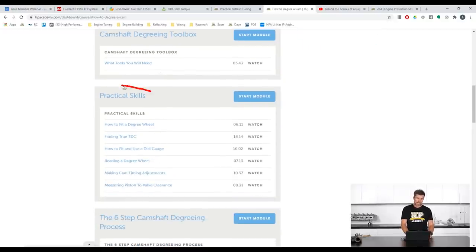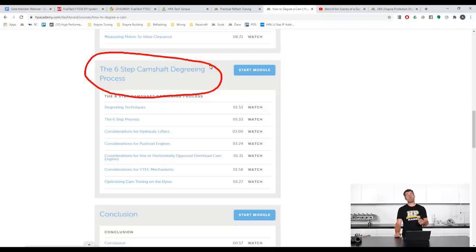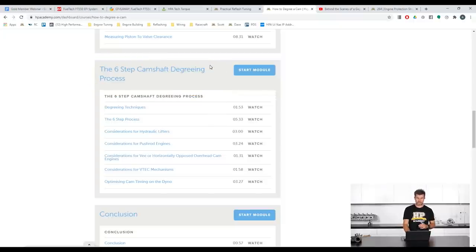We've got a section here that covers some of those practical skills such as how to find true top dead center, how to use a dial gauge and how to read your degree wheel, then actually making your camshaft adjustments. We've got a really nice, simple, succinct, six step camshaft degreeing process. This is applicable regardless if you've got a relatively simple pushrod LS V8 or you've got a quad cam V12 with four variable cam wheels or vernier cam gears. It doesn't matter, anything in between, the six step process is applicable.